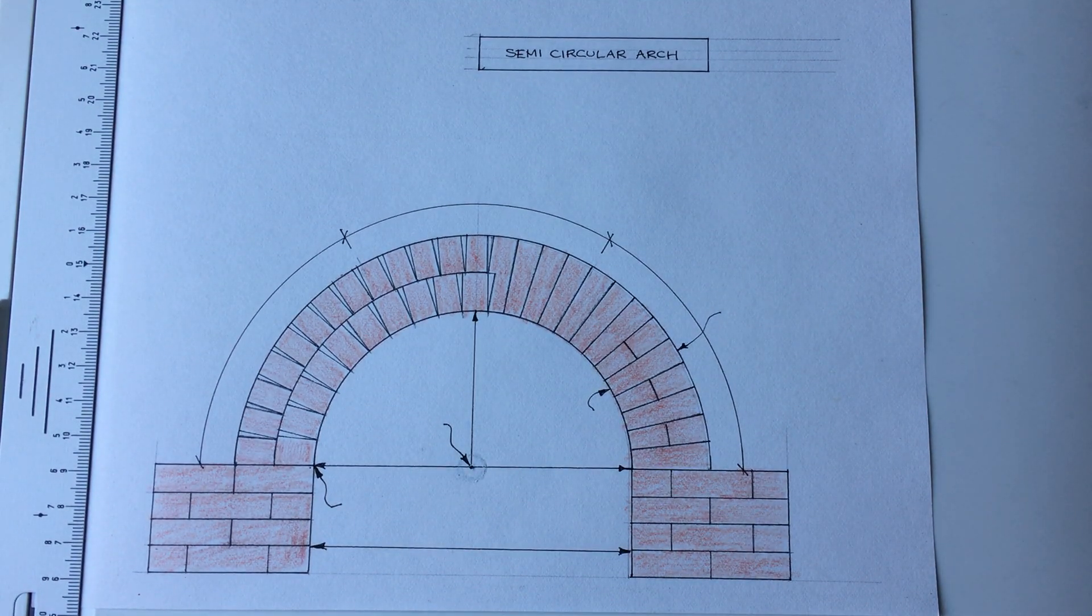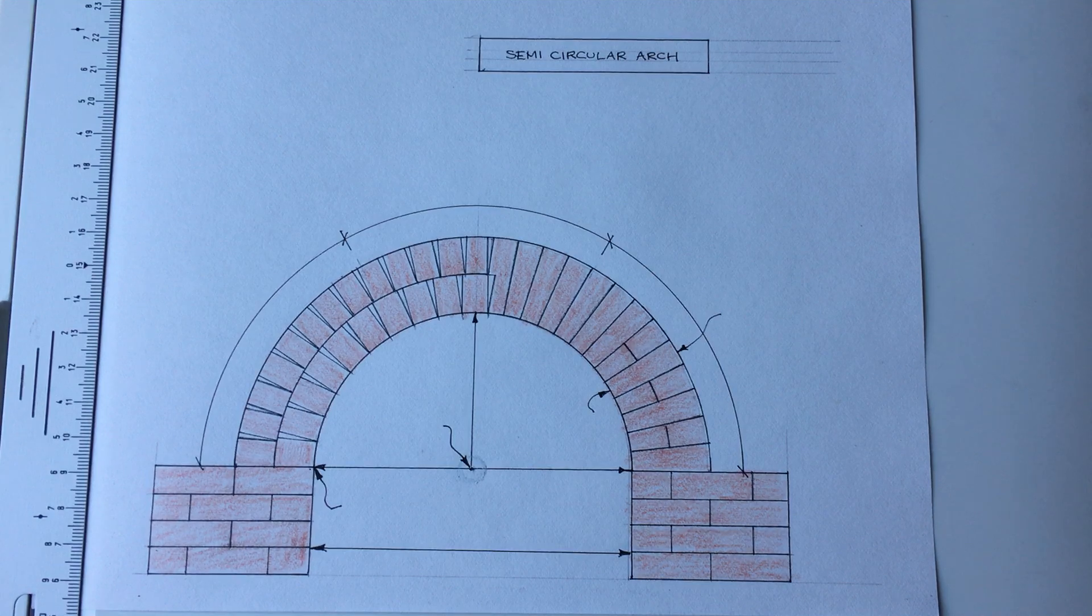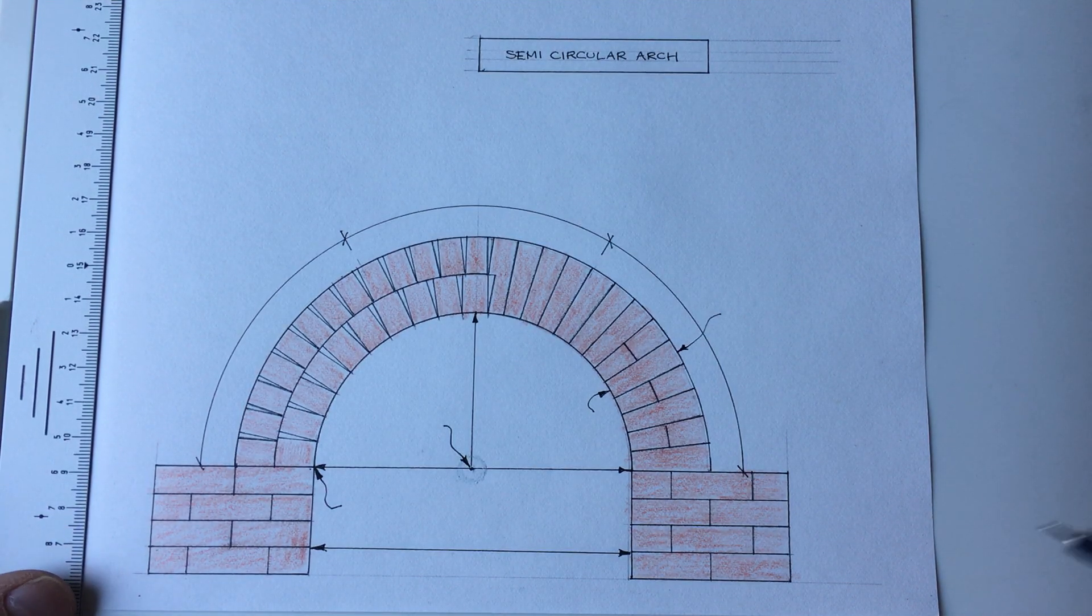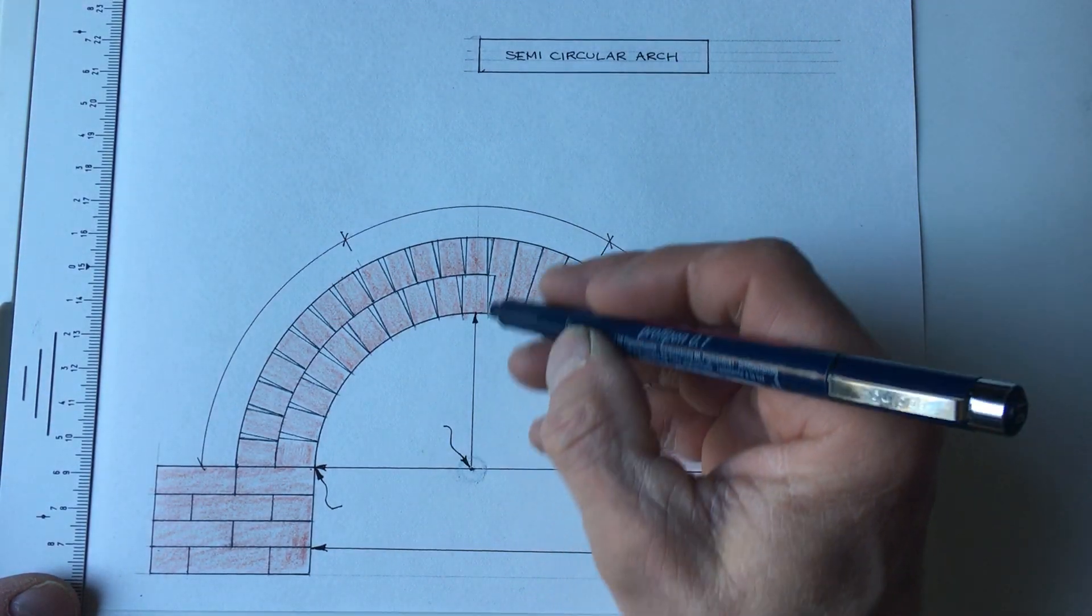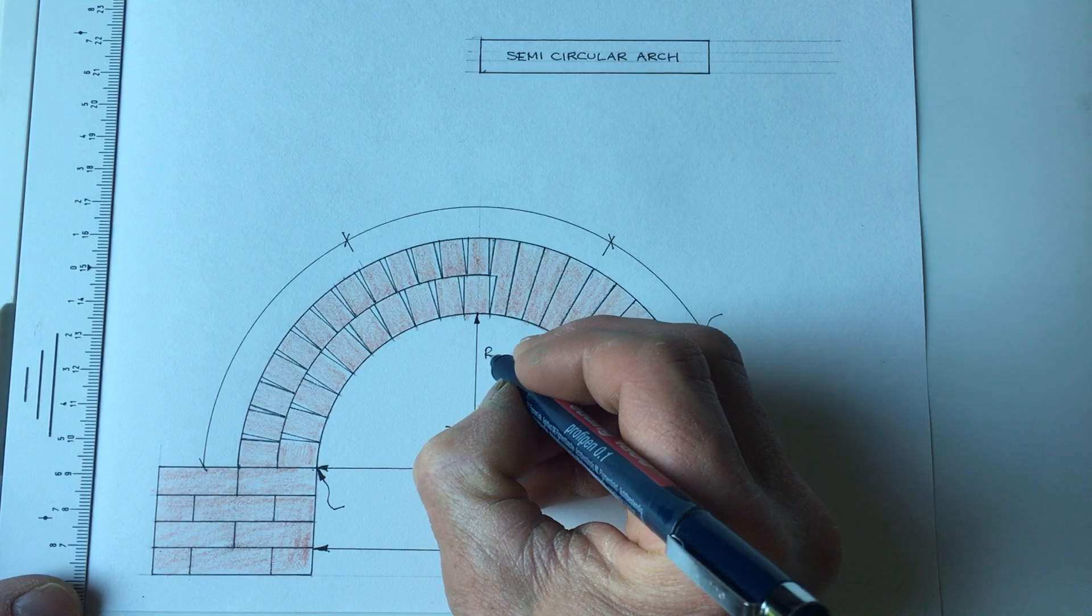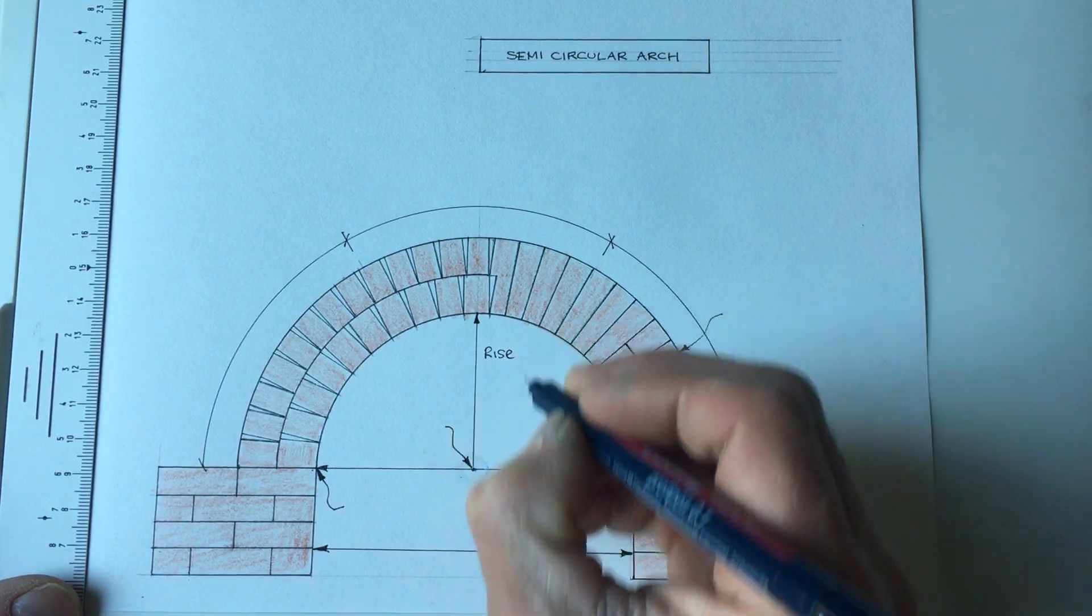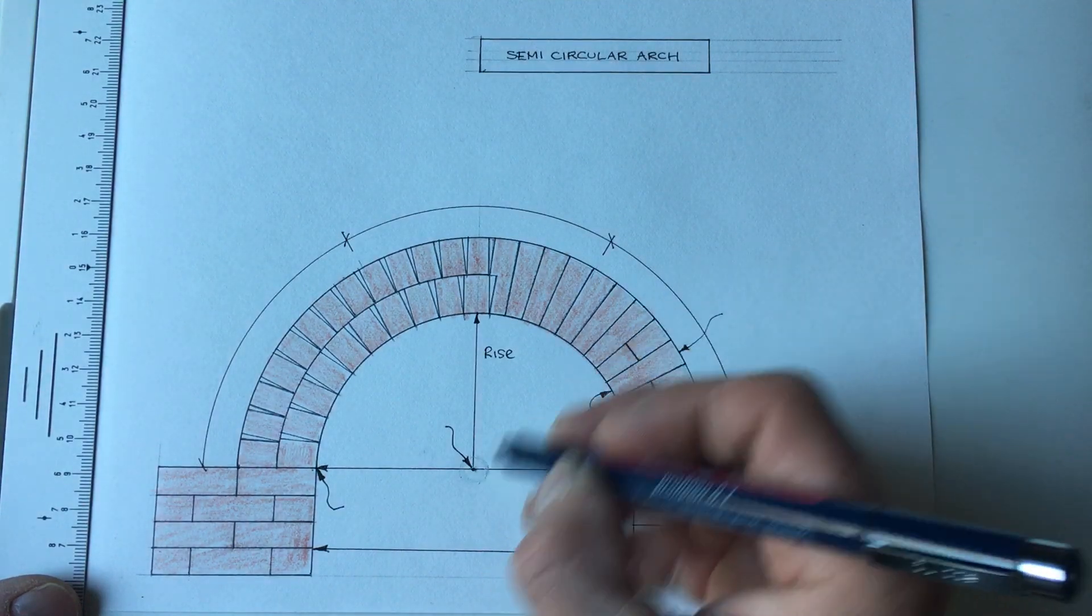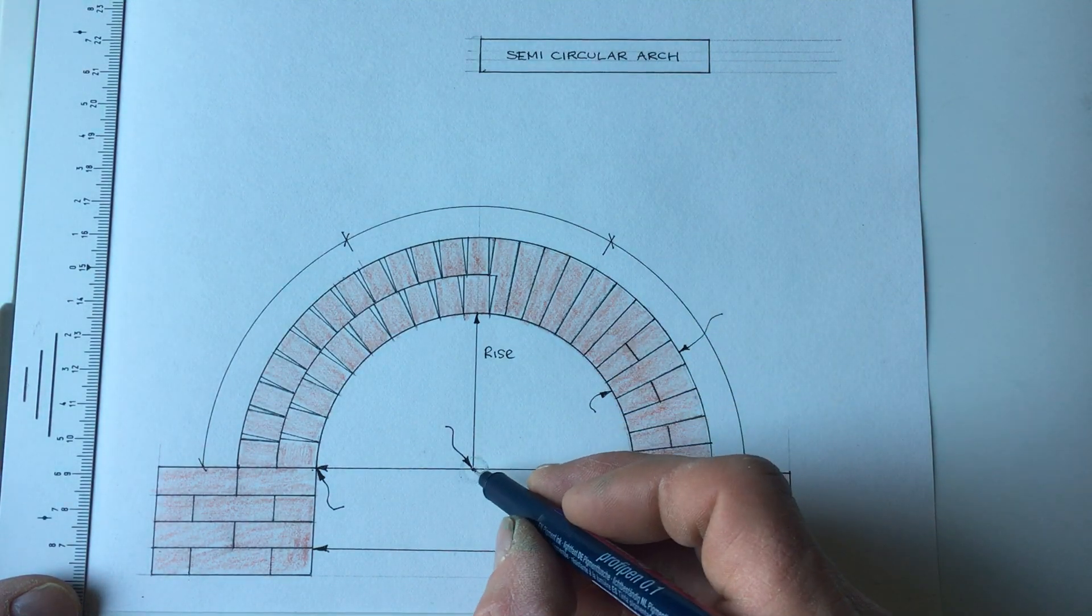So this is the arch finished and ready for labeling up, and we'll start straight away with the easy ones first. We see here this is called the rise. Here is where everything radiates from, and this is called the striking point.